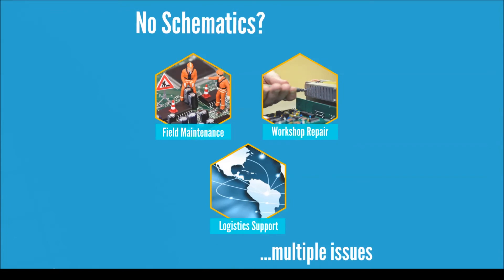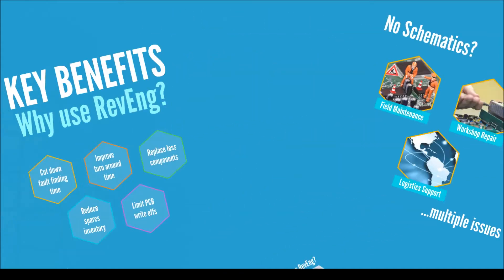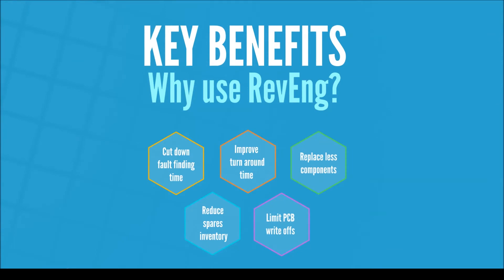The supply chain might also be affected, as time and money is spent trying to get a much larger than required set of spare parts into the business to keep strategic electronic systems running 24x7. And that is precisely where Revenge steps in.